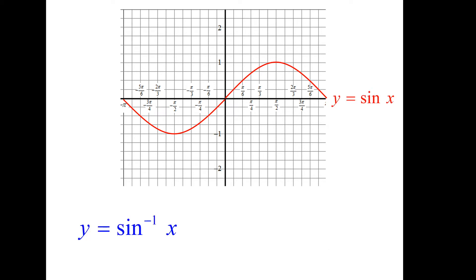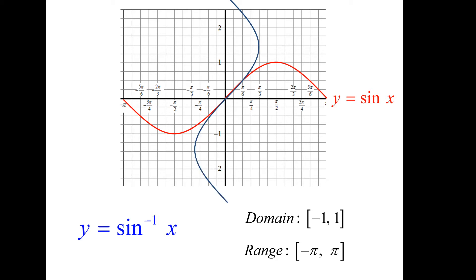What about the inverse of sine of x? We just swap the domain and the range: instead of negative pi to pi, we use negative 1 to 1 for the domain, and the range is negative pi to pi. But if you try the vertical line test on the graph, the line intersects at two points, so we need to put in a restricted value for the range. The line of symmetry of the original graph and the inverse is always y equals x — shown here as the green dotted line.